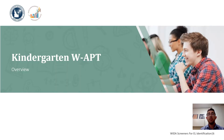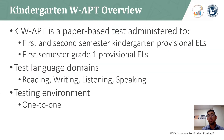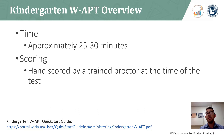Here is an overview of the Kindergarten WAPT. The Kindergarten WAPT, or KWAPT, is a paper-based test administered to first and second semester kindergarten provisional ELLs and first semester grade one provisional ELLs. The screener assesses reading, writing, listening, and speaking, and is given in a one-to-one testing environment. The KWAPT takes approximately 25 to 30 minutes to complete and is hand scored during the test administration. More information along with downloadable materials can be found by following the link below.